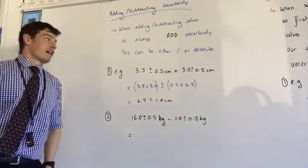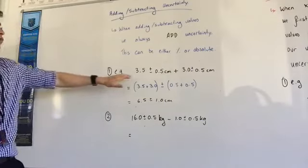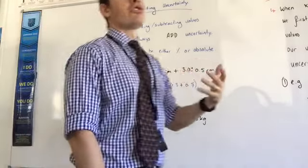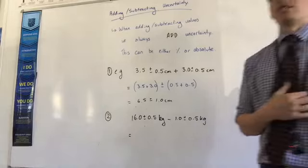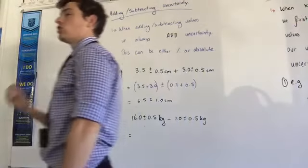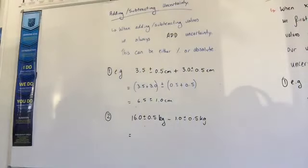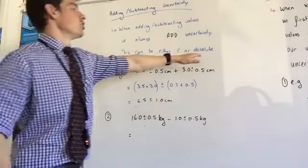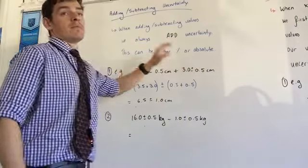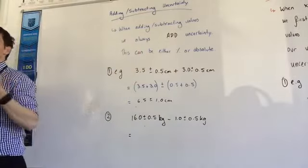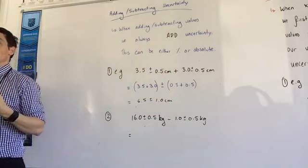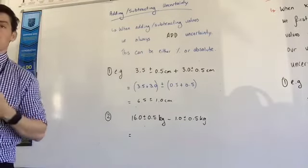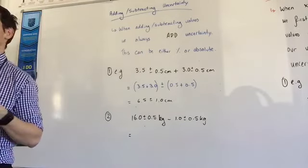So with an addition or subtraction, we treat the numbers, the values out the front, we treat those the same way. So you add or subtract them as the question is asking. However, with the uncertainty, we always add them. Now we can do that with either the absolute or the percentage. So you can deal with absolute or percentage values providing they've got the same unit in addition and subtraction with uncertainty.